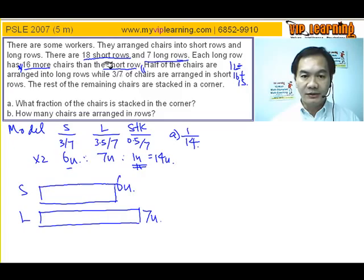Now this information comes in handy. 18 short rows, so there are 18 short rows. And there are 7 long rows.